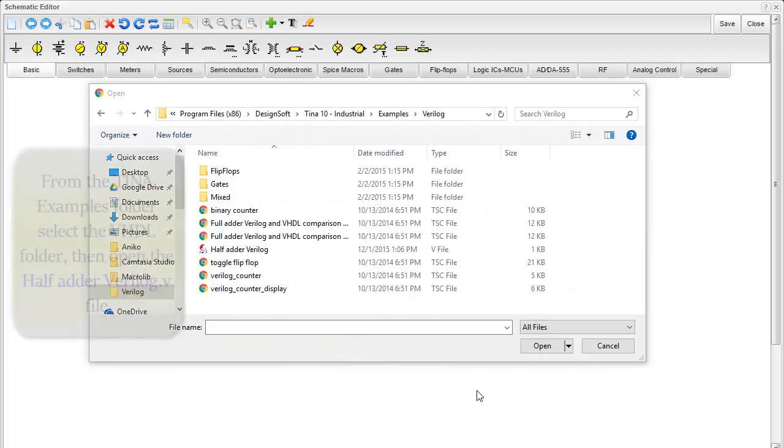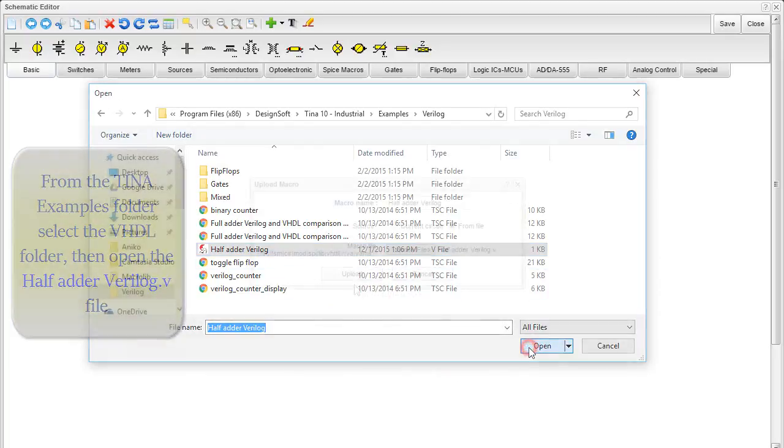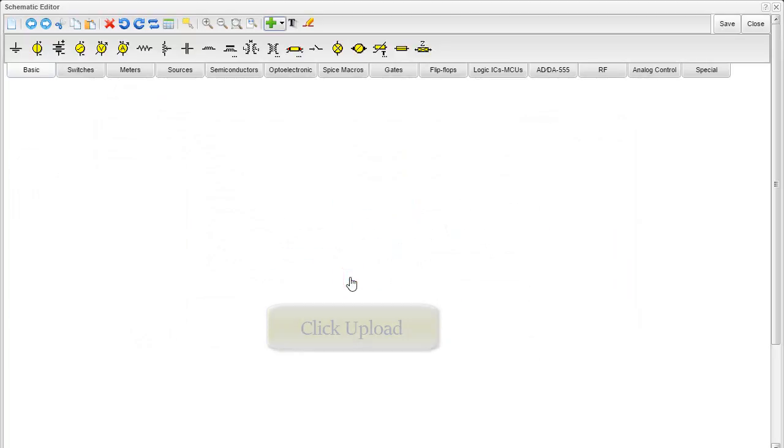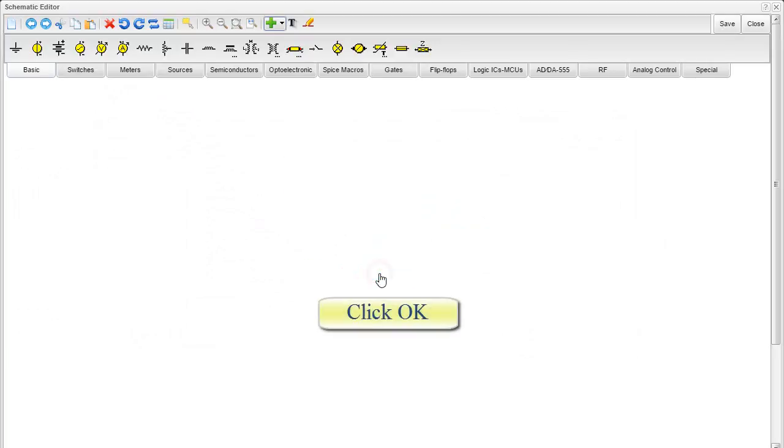Click Choose Files. From the Tina Examples folder, select the VHDL folder. Then open the HalfAdderVerilog.v file. Click Upload. The following note appears: Macro Uploaded. Click OK.